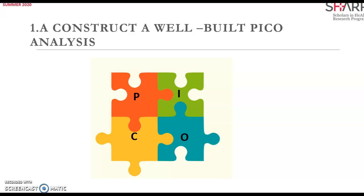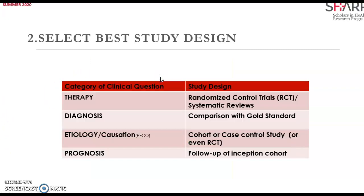O represents the outcomes. What is the effect of the intervention? What do you hope to accomplish, measure, improve, or affect with this intervention? What are you trying to do for the patient — relieving or eliminating symptoms, reducing side effects, or reducing cost? After asking a well-built structured clinical question directly relevant to the problem at hand, it should be paraphrased to facilitate searching for a precise answer.